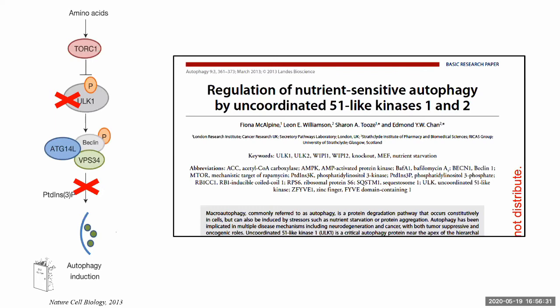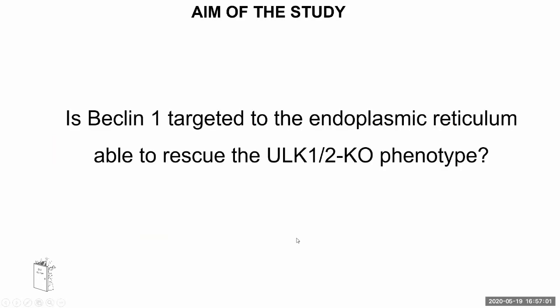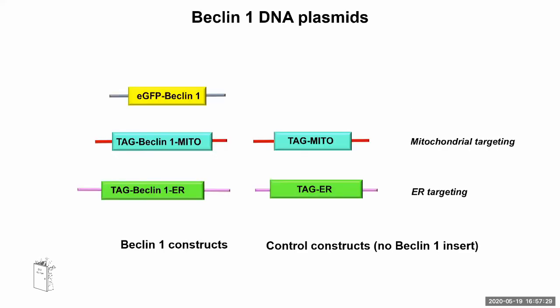A few years into my PhD, a group published data showing that in the absence of the ULK kinases, autophagy induction is severely impaired. Keeping this in mind, we came to our aim: we wanted to answer whether Beclin-1 targeted to the endoplasmic reticulum was able to rescue the ULK1/ULK2 knockout phenotype. If we don't have ULK to activate the Beclin complex, can autophagy still happen? Is Beclin-1 alone able to induce autophagosome formation without the ULK step?